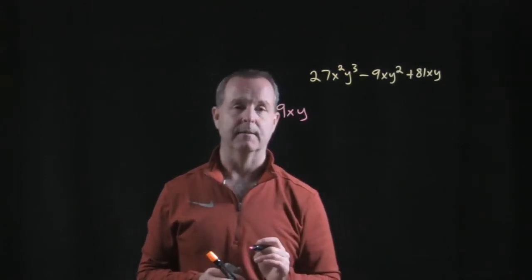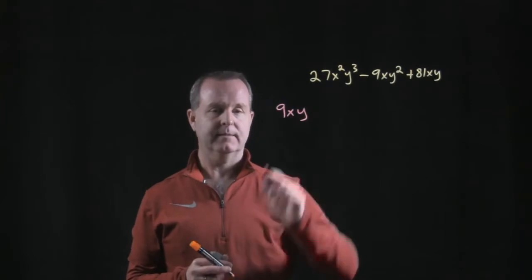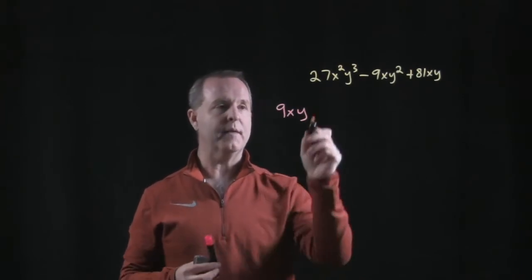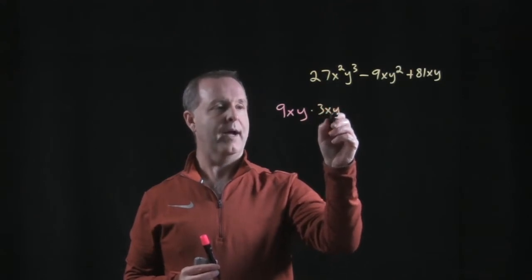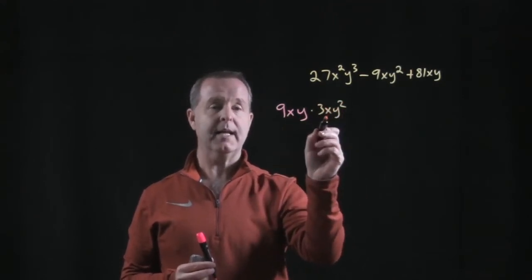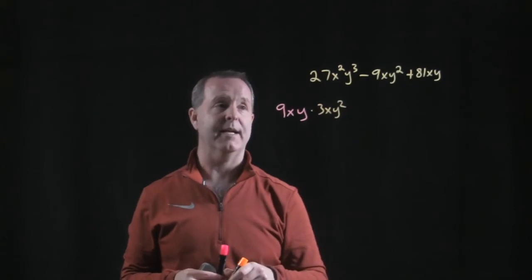So there's my greatest common factor. So let's use that to determine what these values are. So this is going to be a 3x, y squared. These two terms together, multiplied, produce the 27x squared minus 3.